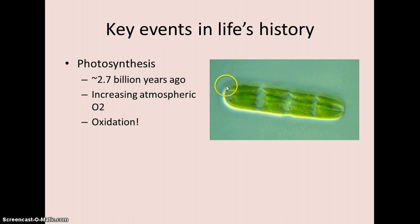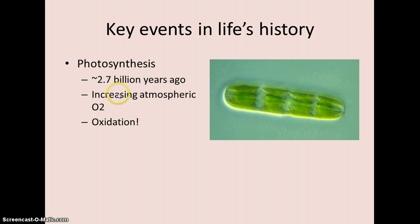Some of these early prokaryotes start to photosynthesize about 2.7 billion years ago. This of course led to turning the oxygen in H₂O into O₂ — before this time there was no free oxygen gas on the planet. This changed the planet a great deal, particularly the atmosphere, leading from a reducing atmosphere to an oxidizing atmosphere full of oxygen. We know this happened around 2.7 billion years ago because that's where you start to see rocks that are oxidized — where rusting occurs.